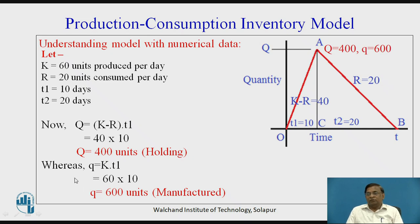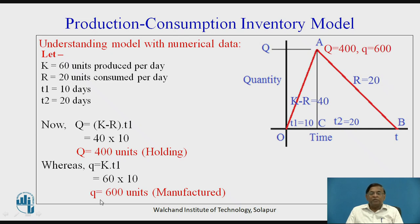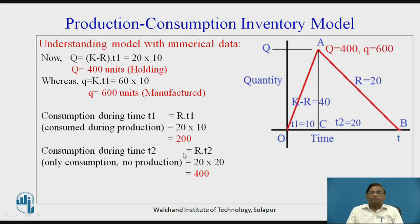But how much have we actually manufactured? That is small q. Small q = K × T1 = 60 × 10 = 600 units — the quantity manufactured. To make the difference clear: small q (600 units) is the quantity actually manufactured, while capital Q (400 units) is the quantity physically held in inventory.